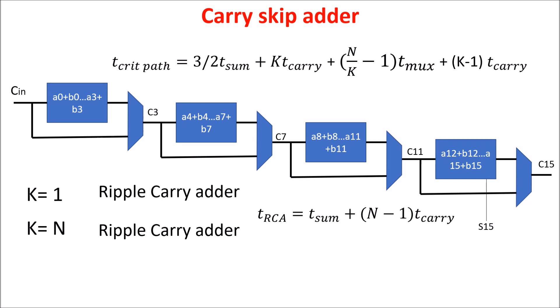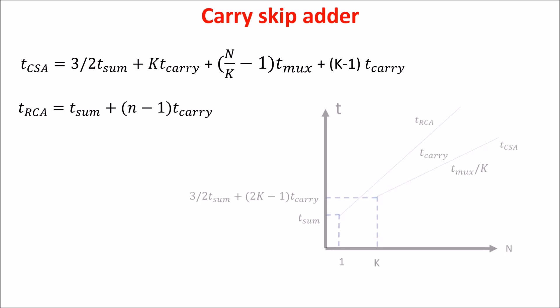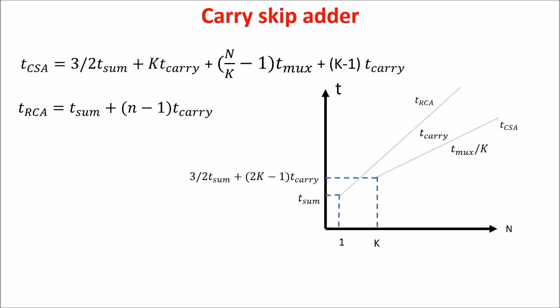So, how to choose K value for minimizing the total delay? So, if we see the timing equation of the carry skip adder and that of the ripple carry adder, we note that the delay has a linear relation with n, but in the ripple carry adder, the slope is T carry, and in the carry skip adder, the slope is T max over K, so we may be tempted to increase K, but we saw that if K is equal n, we come back in the ripple carry situation, and we see in the equation that the delay has a linear relation with K too.